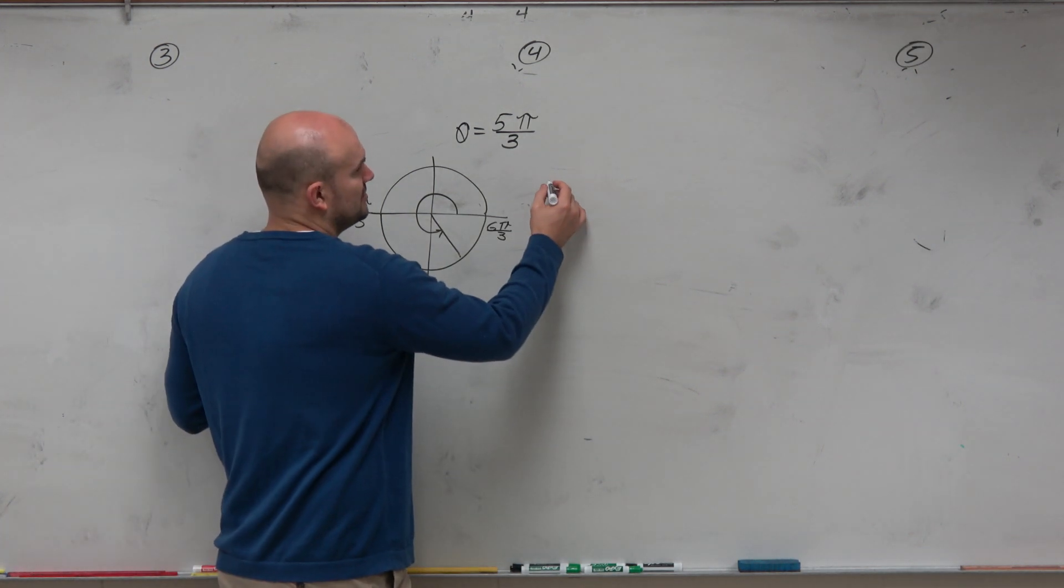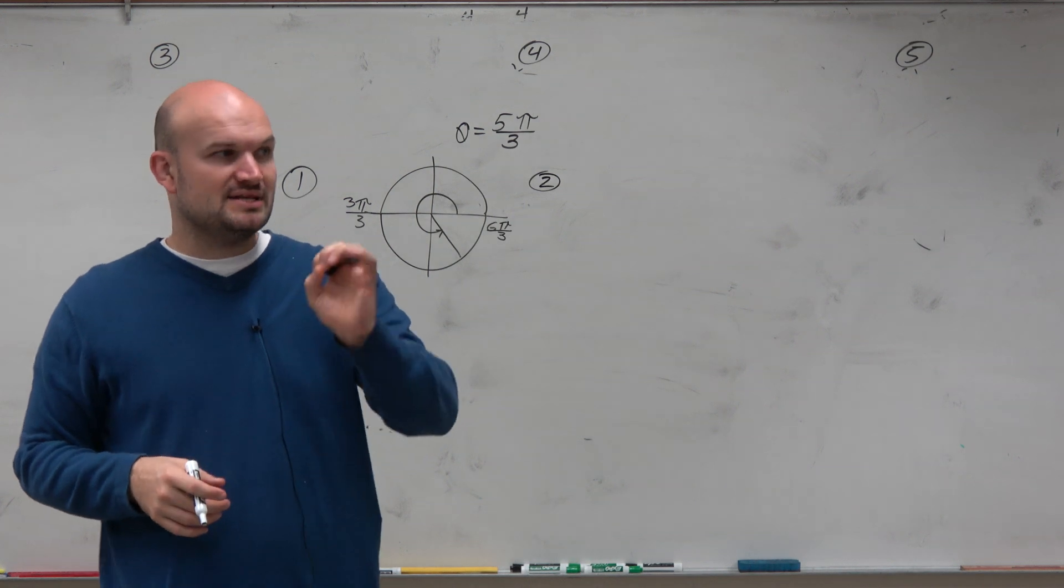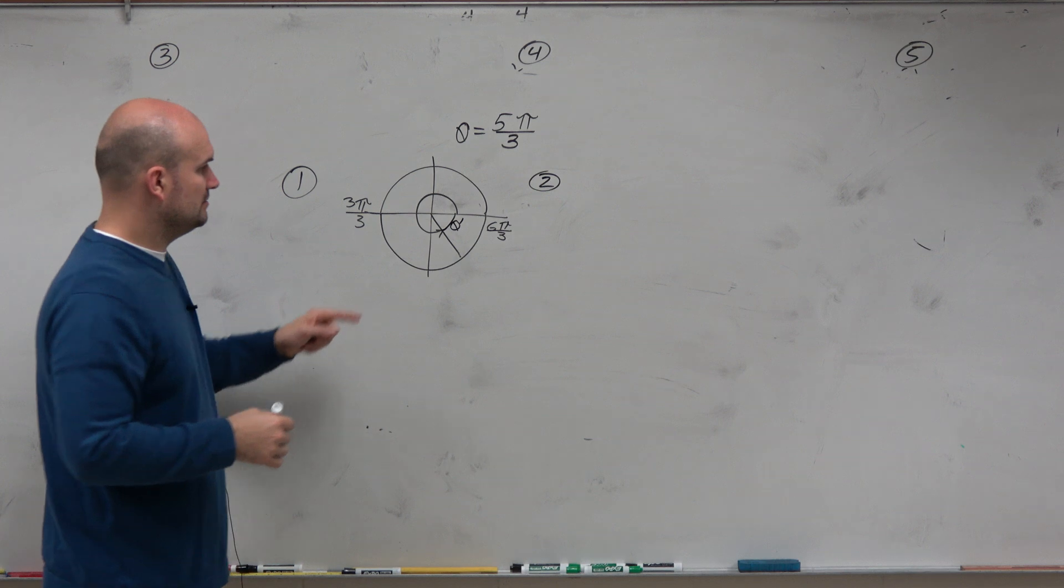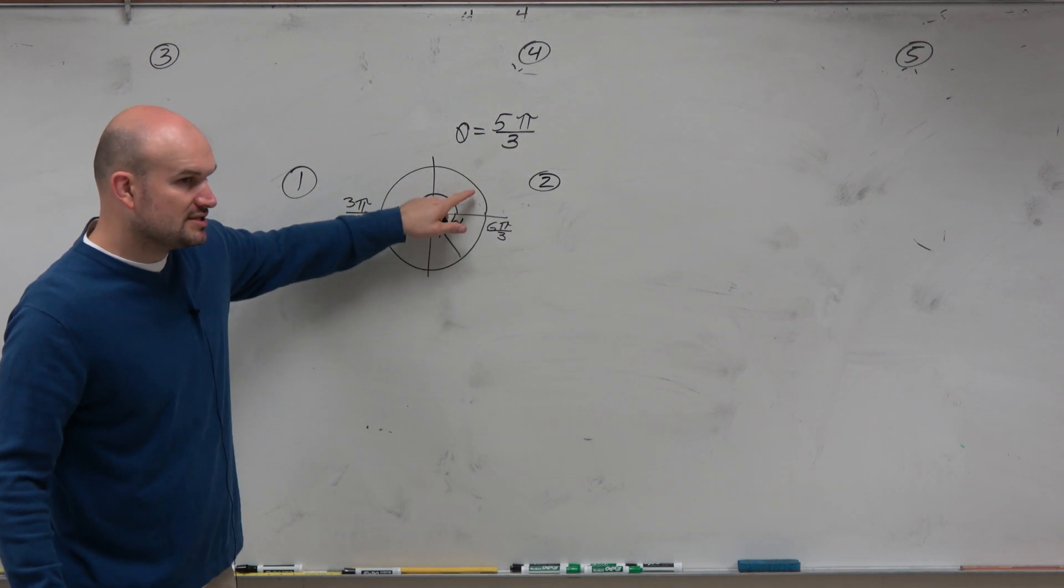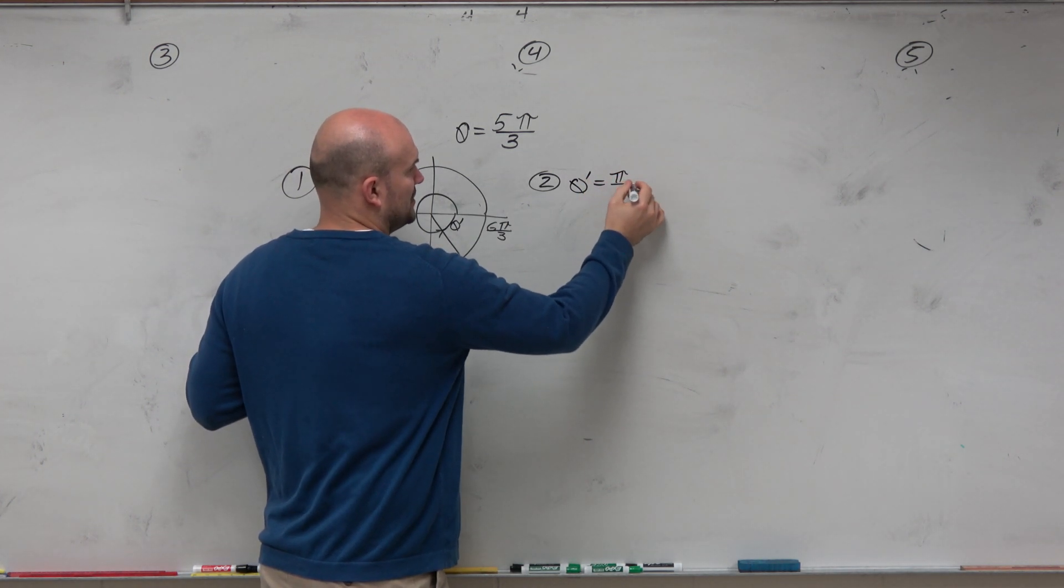So step number 2 is to identify the reference angle. Remember, the reference angle is the positive acute angle between the terminal side and the x-axis. Well, if we're π over 3 short to making a full revolution, then we know that θ prime is equal to π over 3.